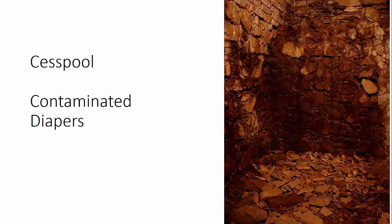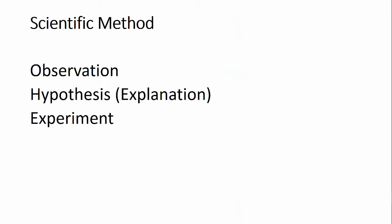It was later discovered that the well the pump drew water from was dug right next to a cesspit. When they examined the cesspit, they discovered that soiled diapers from a baby that had contracted cholera were washed into the cesspit and had leaked into the well. So we see that making an observation, constructing a hypothesis, and doing an experiment allowed Dr. Snow to show that cholera was due to contaminated water, not bad air. And this is how the scientific method works. Thank you for your attention.